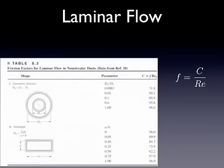If you have a rectangular pipe or there's even an annulus pipe shown here in the figure, you use a different value for that constant to calculate what the friction factor is under laminar flow conditions.